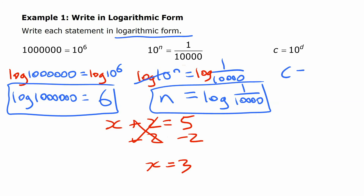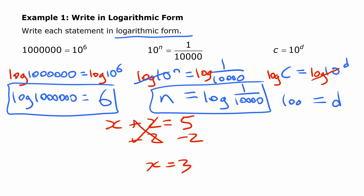For the next one, c equals ten to the d. If we want to eliminate this anti-log function, we take the common log (log base ten) of both sides. That cancels out and we just have d equals log of c. Up to this point we've done this by understanding what a logarithm is, but this property of inverses is helpful when working with equations.